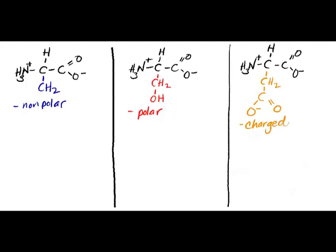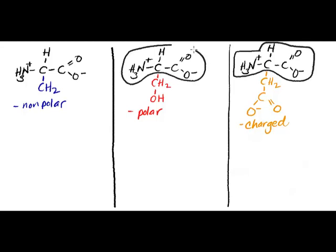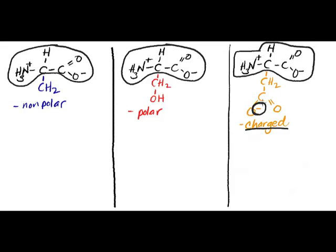I'm going to start with the charged amino acid side chain. This part of the amino acid is the part that every single one of these has in common. So when we're looking to predict the properties, we're going to be looking at this side chain here that's hanging off of the amino acid. First: charge. How do I tell that it's charged? I look right here and I see that there's an actual full charge as part of the side chain.